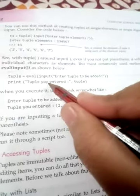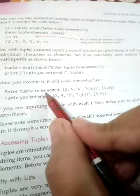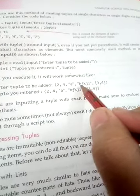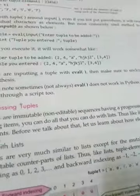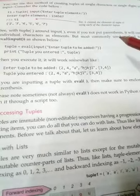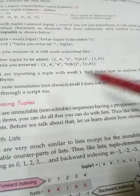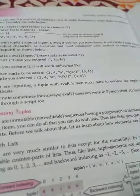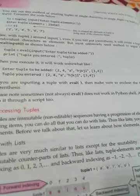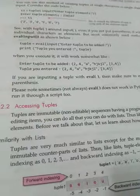Using eval(input('Enter the tuple: ')), whatever value the user enters is printed as given. For example, if the user enters (2, 4, 'a') or ('aj', 'kj', 'l', 3, 4), all values are stored correctly in the tuple. When inputting a tuple with eval(), make sure to enclose the tuple elements in parentheses. Note: sometimes eval() does not work in the Python shell depending on the Python version — in that case, use a script file.